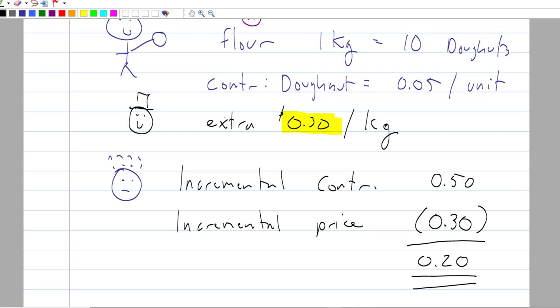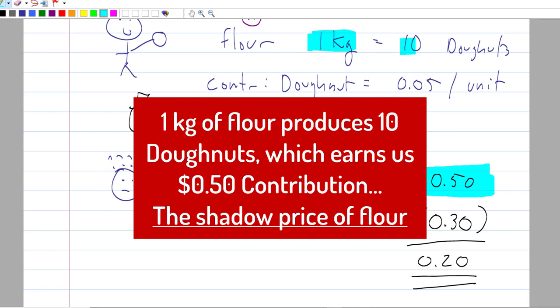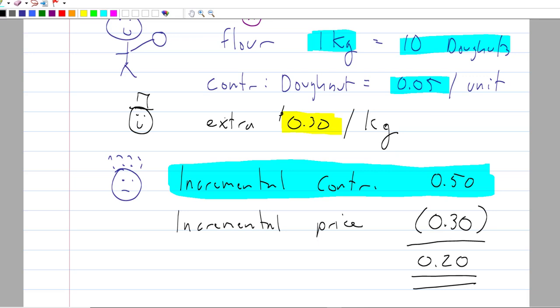Guys, this is a short-term decision, and we have just met the concept of shadow price. Shadow price is the incremental contribution that we will earn from acquiring one more unit of scarce resource. So, if I can get my hands on one more kilo, I'll make 10 doughnuts, 5 cents per unit. I'll earn an extra 50 cents. That is the shadow price. There it is. It is that straightforward. And that tells me how much extra would I be willing to pay for that scarce resource. So, I would be willing to pay up to 50 cents extra. Then I'd break even. So, maybe I'd prefer 49 cents. So, at least I make something.